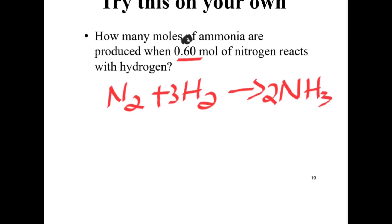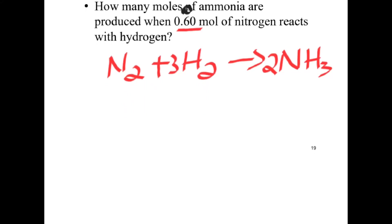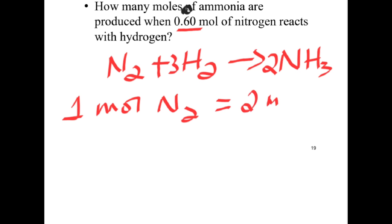From the balanced chemical equation, how many moles of ammonia are produced when 0.6 moles of nitrogen react with hydrogen? From the balanced chemical equation, one mole of nitrogen produces two moles of ammonia.